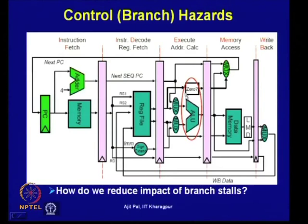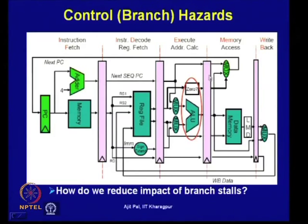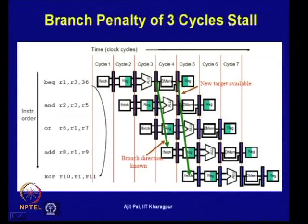As seen in our simple MIPS pipeline, the condition is checked at the execution stage — whether a register content is zero or not — and the address is known only in the memory access stage. So we have to wait until the memory access stage. This leads to a delay of 3 cycles; the pipeline must be stalled by 3 cycles in the normal situation.